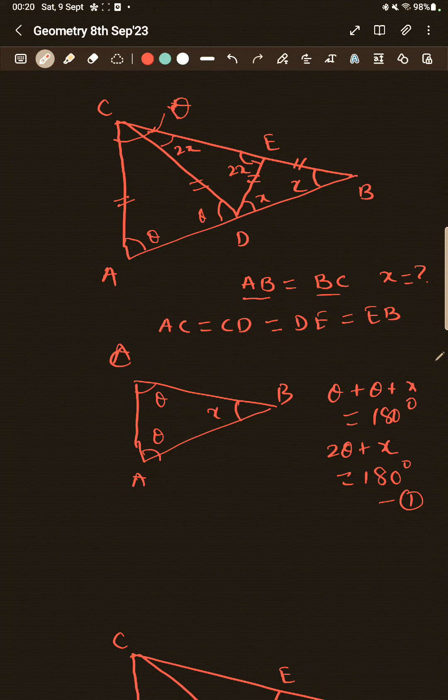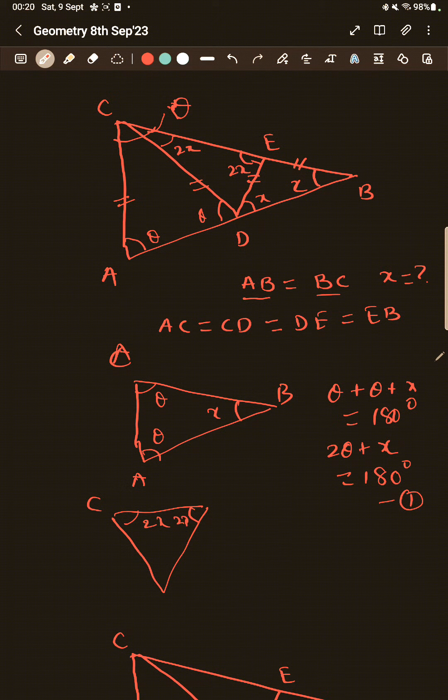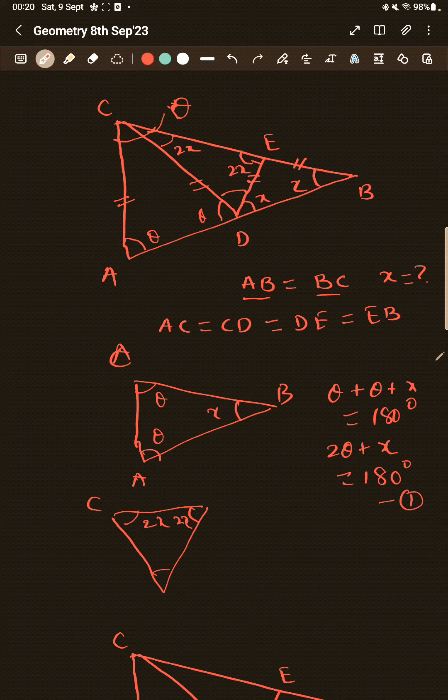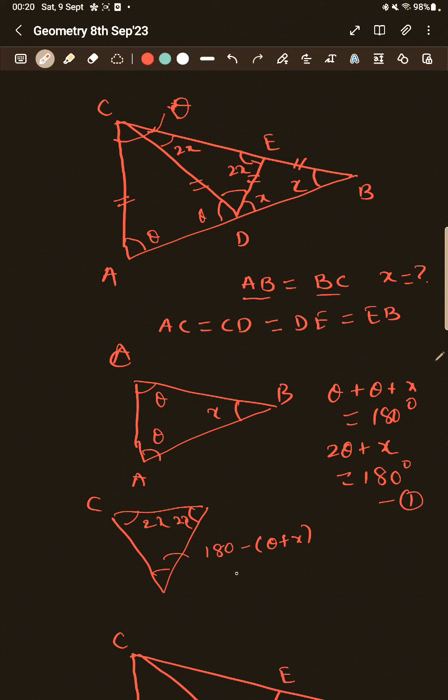For the other equation, just consider this triangle DEC. So in triangle DEC, D is this, this is 2X, this is 2X and this will be what? Because we have this theta, this is X. So this will be 180 minus theta plus X because sum of angles on a straight line will be 180 degrees. So now this is 2X, 2X, 180 minus theta plus X. So these are three angles of the triangle.